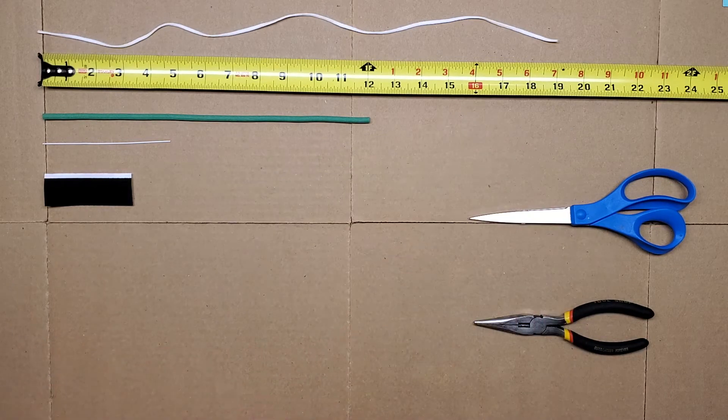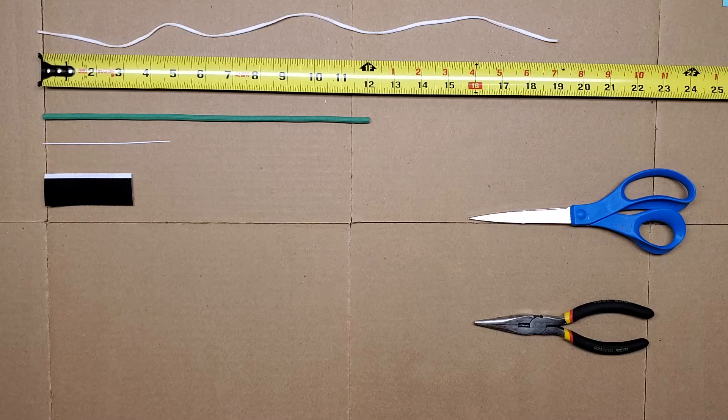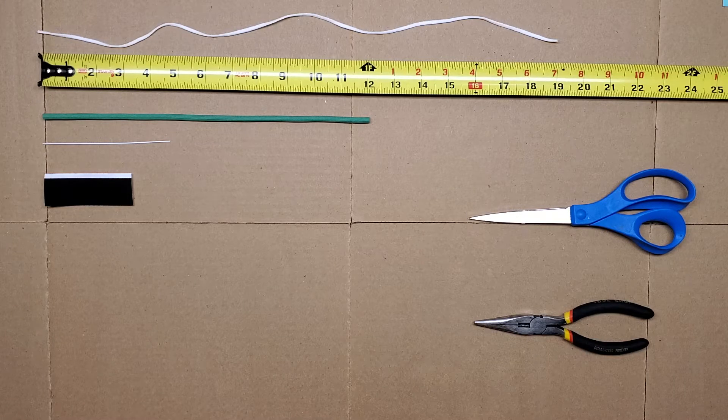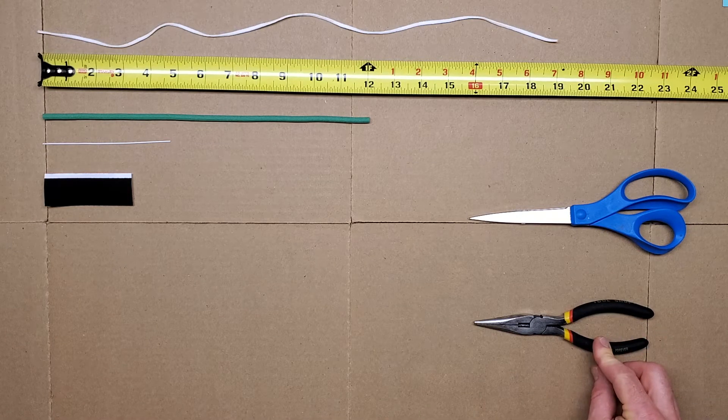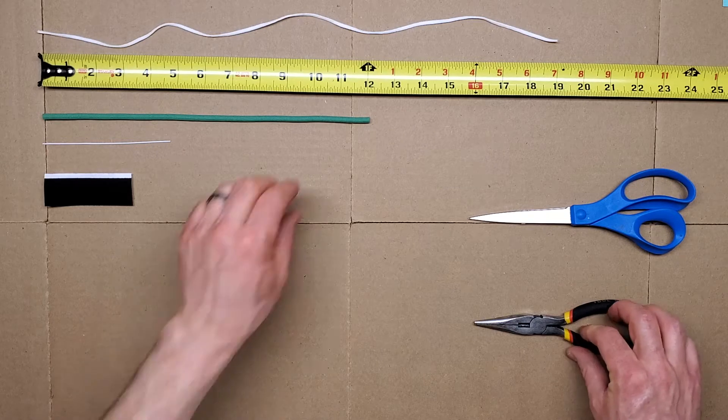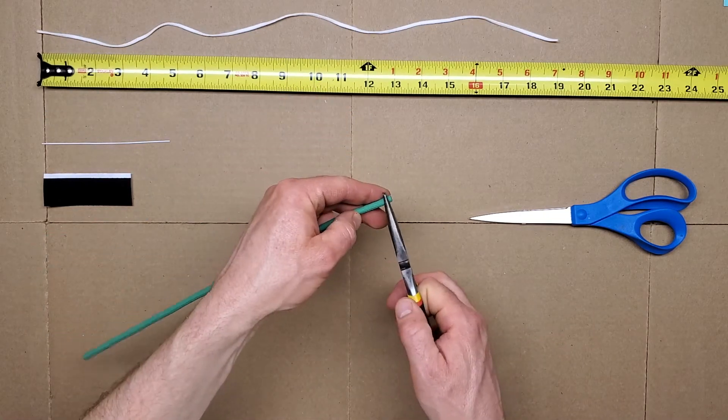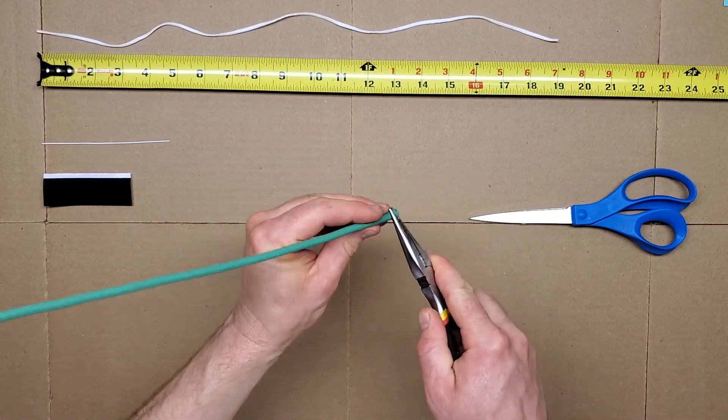I'll use the garden tie here, but the steps are the same for the twisted pipe cleaners. You will need a needle nose pliers or similar. Form a loop at each end of the garden tie.